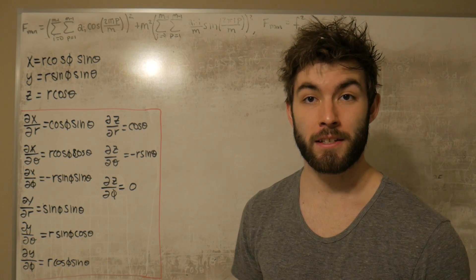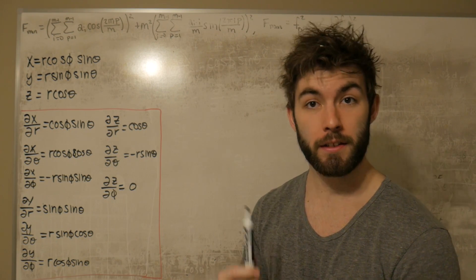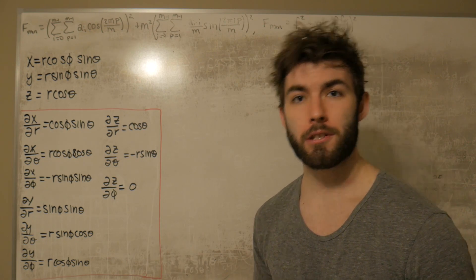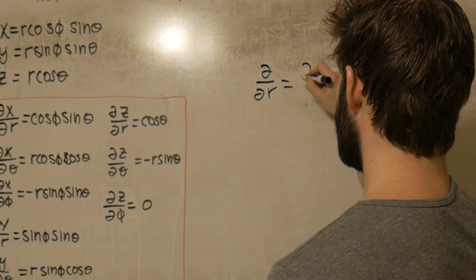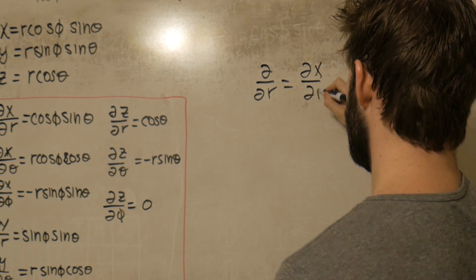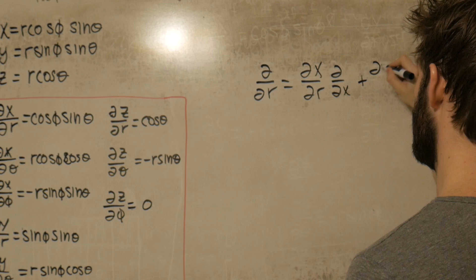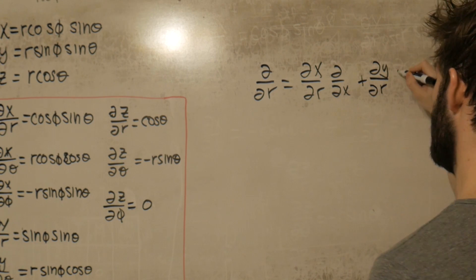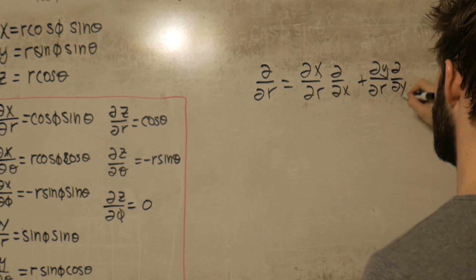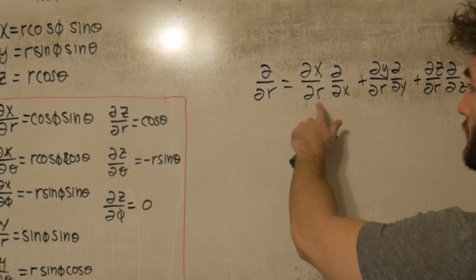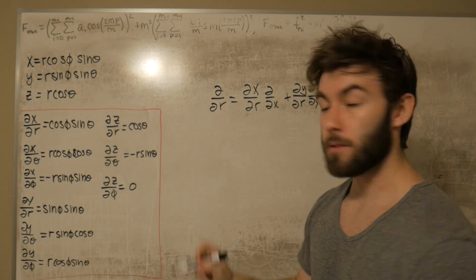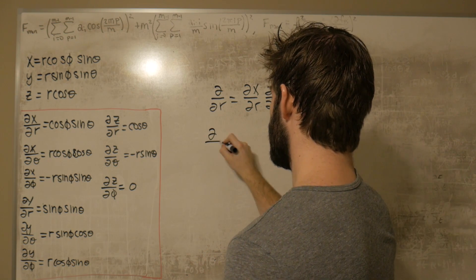Well, the next step for us is to define what dd/dr, dd/dθ, and dd/dφ are by implementing chain rule. So we can define dd/dr equal to dx/dr dd/dx plus dy/dr dd/dy plus dz/dr dd/dz. And the great thing about us constructing this list here is you'll notice that all of these things we've already defined. And we're going to do the same thing for dd/dθ.